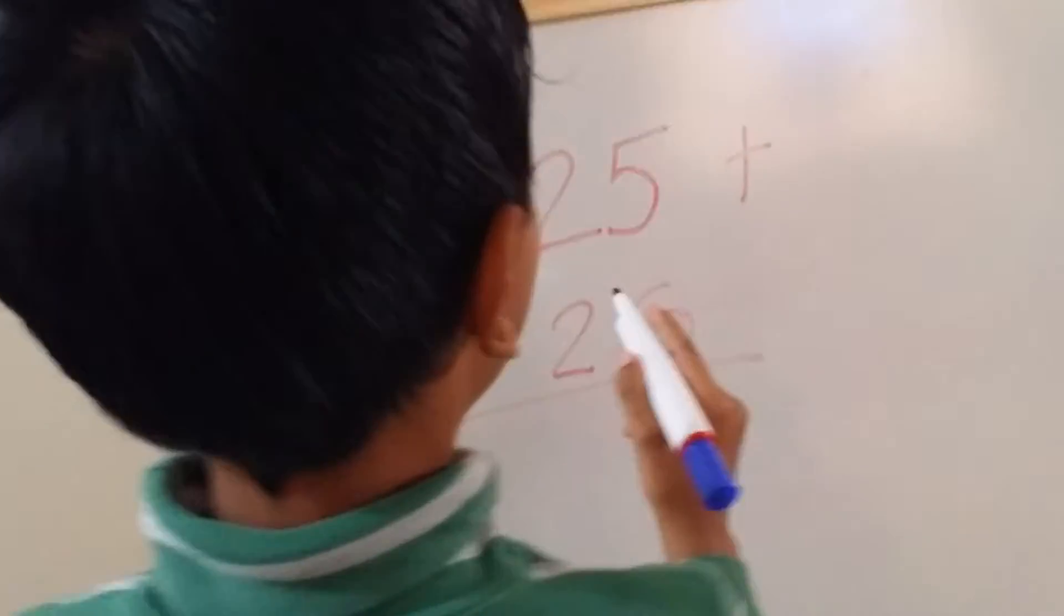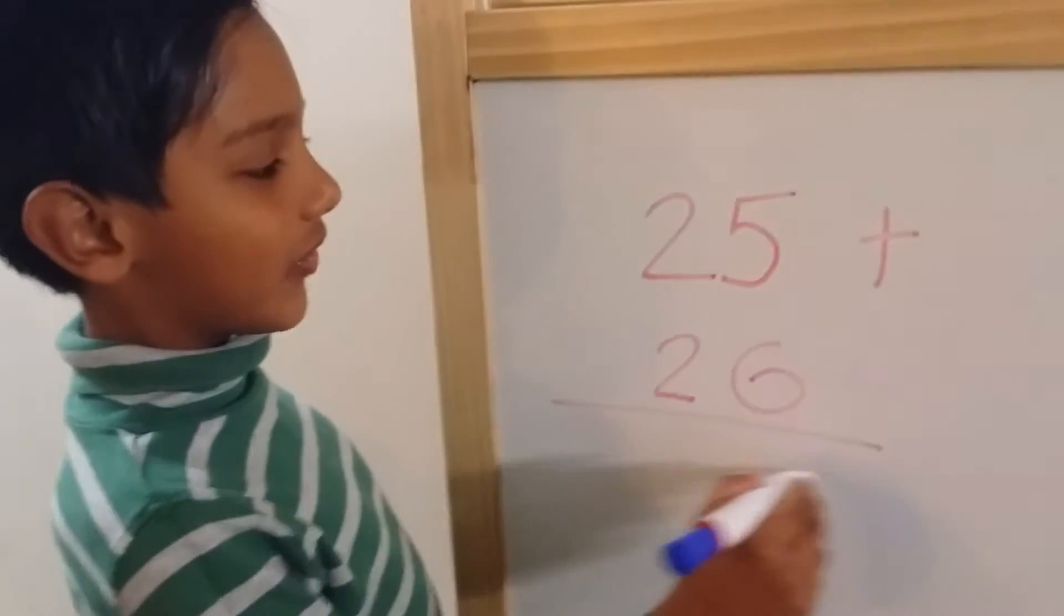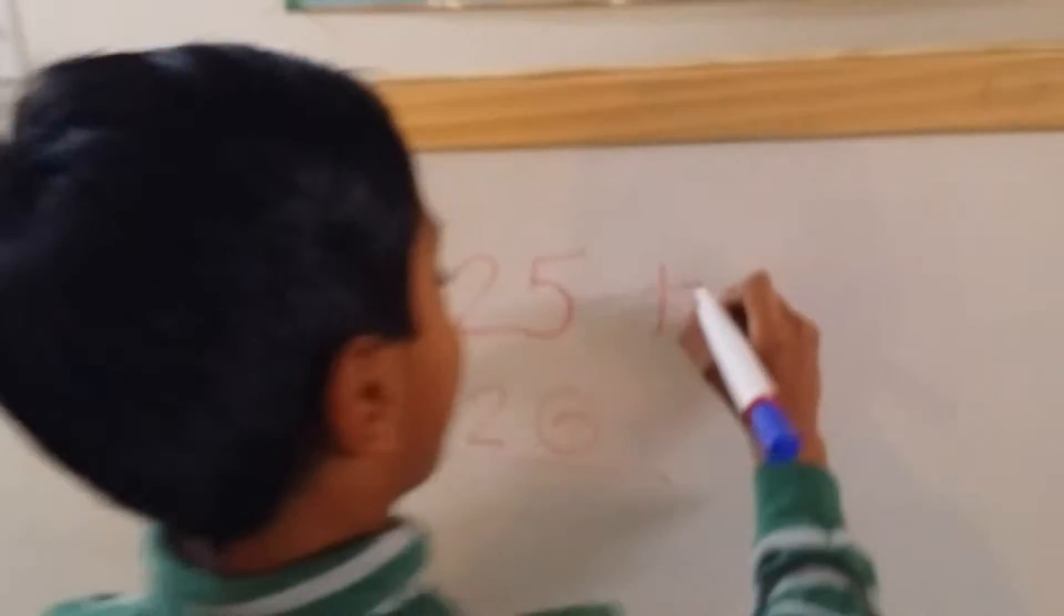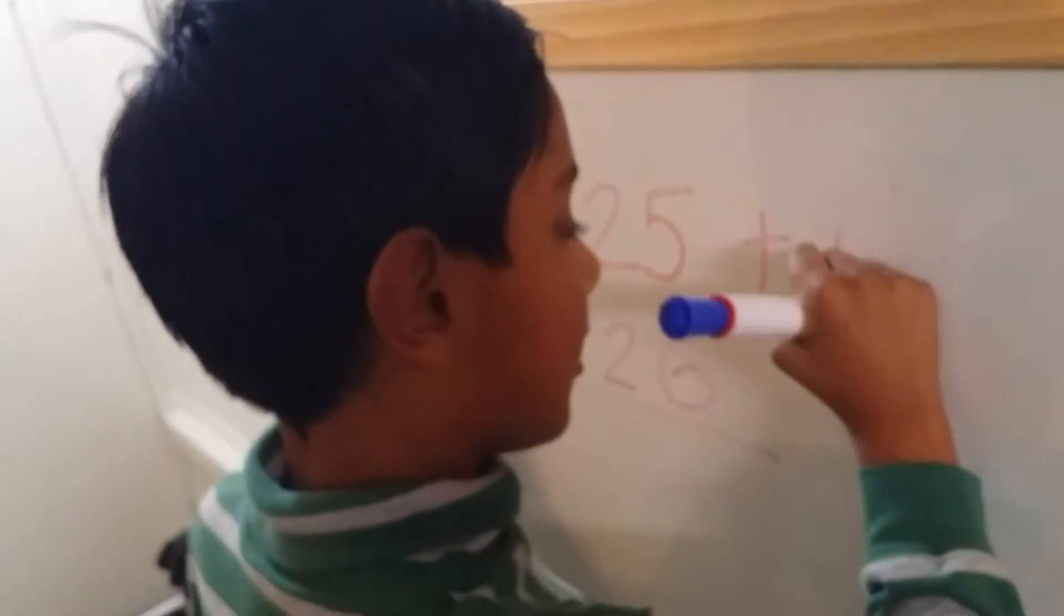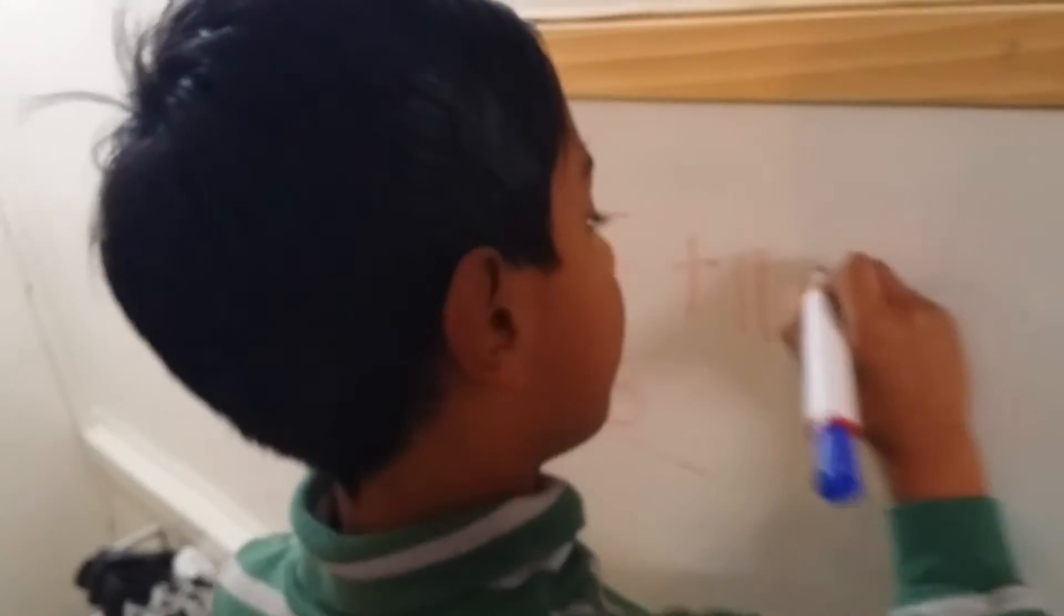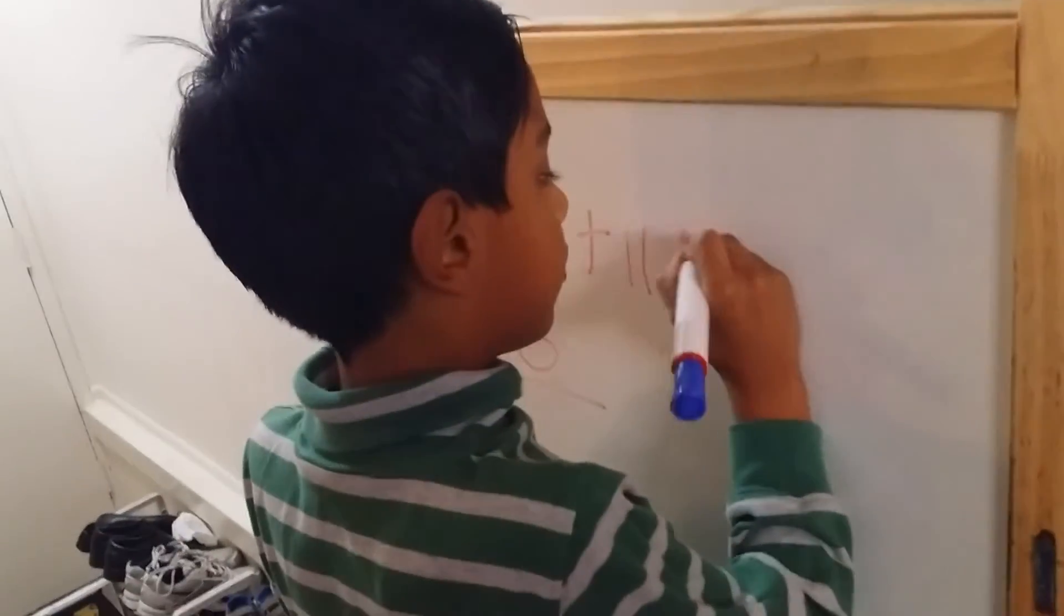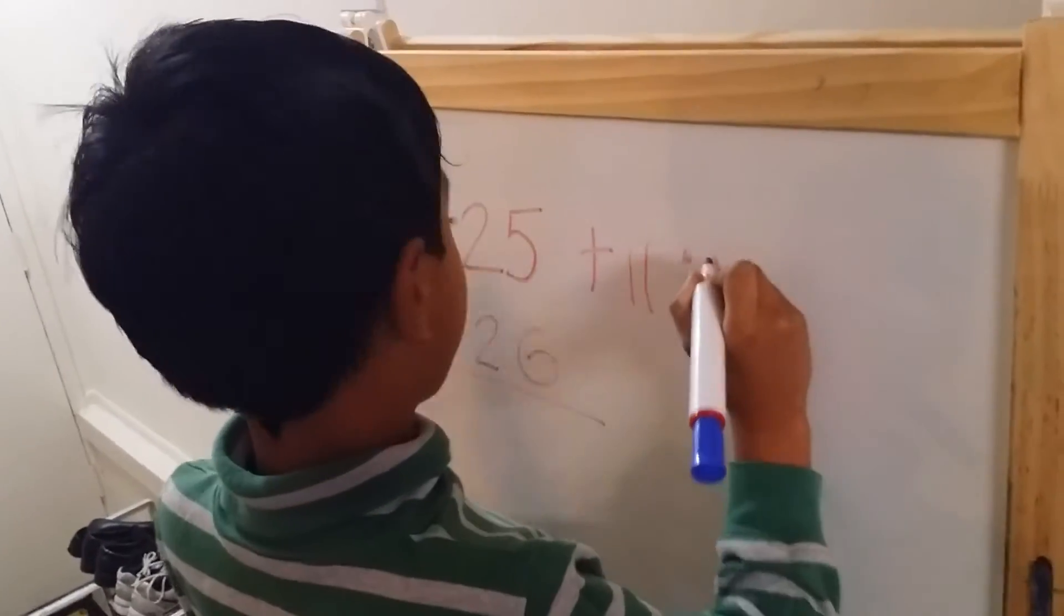My dad wrote the number 25 and 26. What we're going to do is draw two lines and put dots like the number 5.